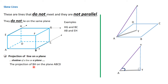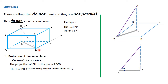Now, the projection of the line BH on the plane ABCD. The plane ABCD is the bottom plane and BH is a diagonal from B to H. The projection of BH would actually be the line DB, because DB is the shadow of BH. If this line were casting a shadow on the plane ABCD, that shadow would be DB, because the source of light comes from the top, H falls on D, and therefore the shadow shown is DB. So DB is the projection of BH on the plane ABCD.